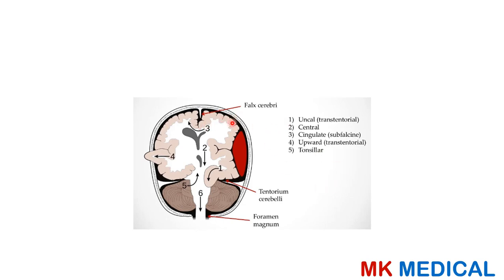The different types of herniation include uncal (transtentorial) herniation, central herniation, cingulate (subfalcine) herniation, upward transtentorial herniation, and tonsillar herniation. Tonsillar herniation is very important because it can compress the vital centers and lead to arrest of vital functions, which can be fatal.